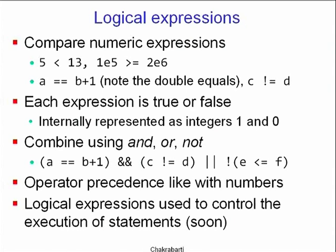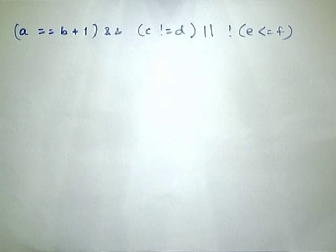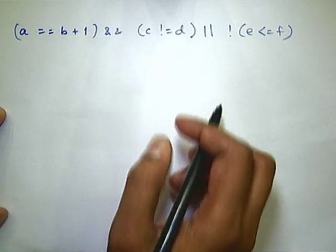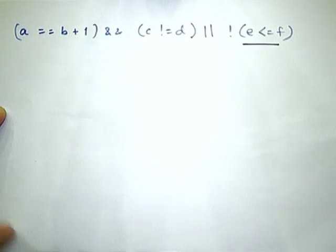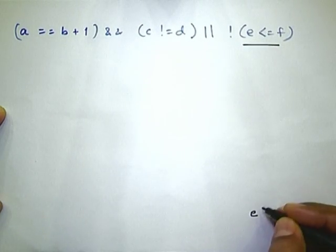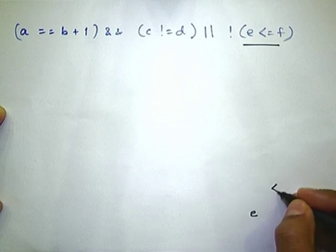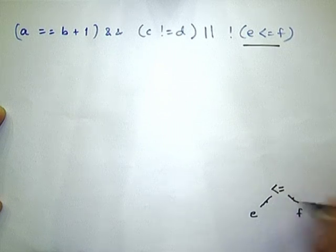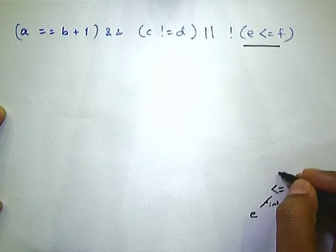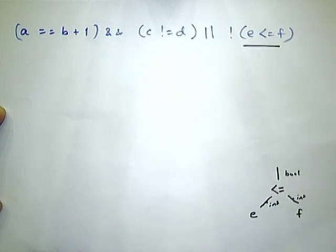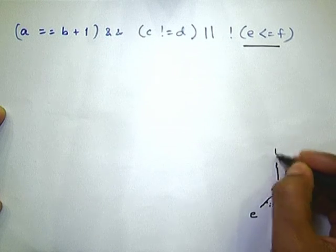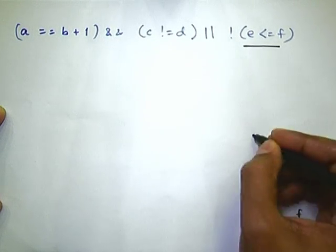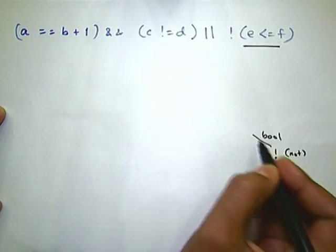Operators have their own precedence rules just like numbers. For example, AND binds more strongly than OR. Consider the expression: AND binds tighter, so the AND happens first outputting a Boolean, then OR combines to give the final Boolean value. If I take just 'e less than equal to f', the value e flows in, the value f flows in, into a relational operator — the thing flowing out is a bool. That goes to a not-operator, which also outputs a bool according to the rules of Boolean algebra.